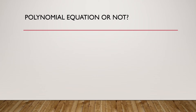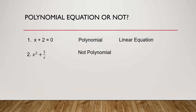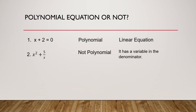Let us try to identify whether the given expression is a polynomial equation or not. For number 1, we have x plus 2 equals 0 — this is a polynomial equation and is an example of a linear equation. For number 2, we have x squared plus 5 over x — this is not a polynomial because it has a variable in the denominator.